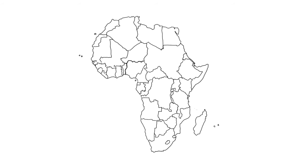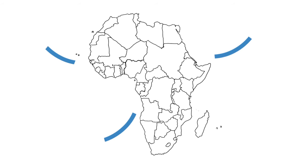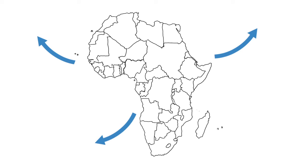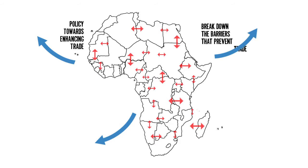Everyone has to live somewhere. African trade, when compared to global levels, remains below its perceived potential, and is particularly low when looking at intra-Africa trade. We must guide policy towards enhancing trade, break down the barriers that prevent trade, and promote the integration of markets in order to achieve Agenda 2063.